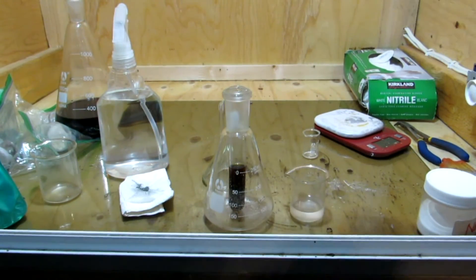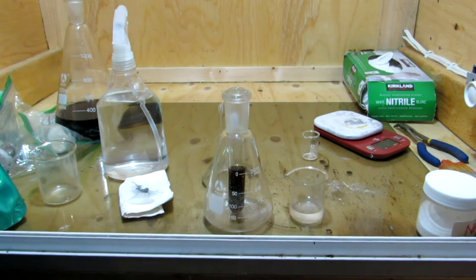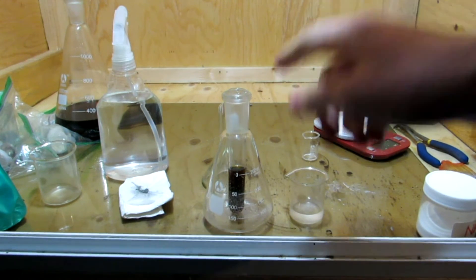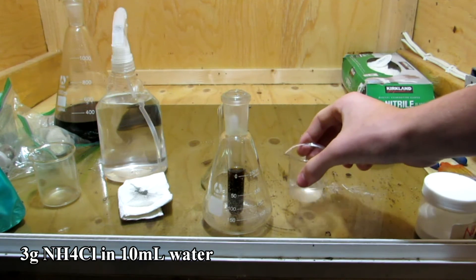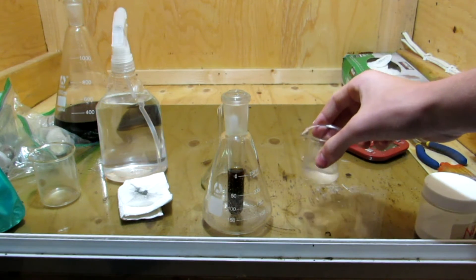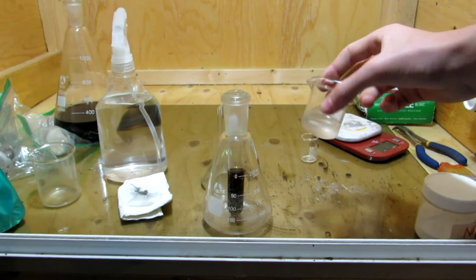After removing excess aqua regia, the hexachloroplatinic acid was re-dissolved in about 10 milliliters of water in a test tube, and a solution of 3 grams of ammonium chloride in 10 milliliters of water was prepared. You can see how to produce ammonium chloride in one of my previous videos.